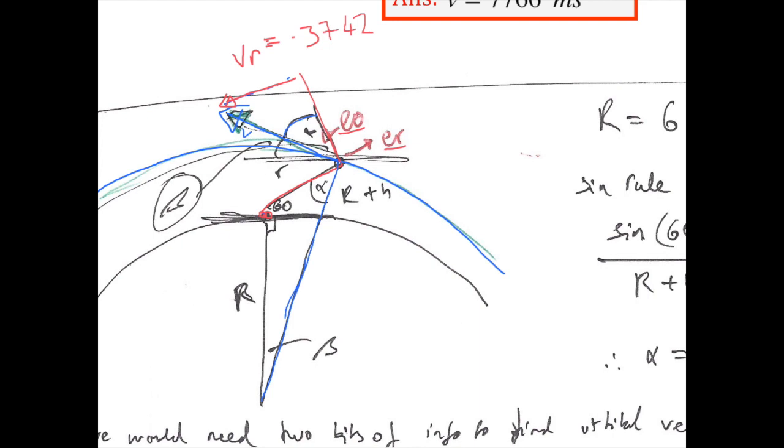So we have a triangle, we know the three lengths, and we know one of the angles already, so this is 60 plus 90, so this is in total 150. So once we have that, we can find out alpha using the sine rule.